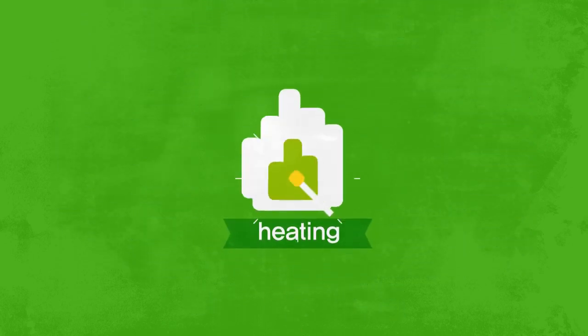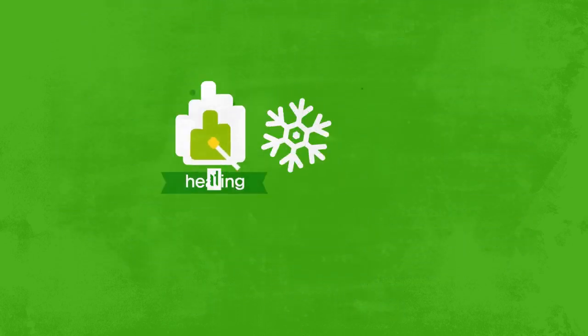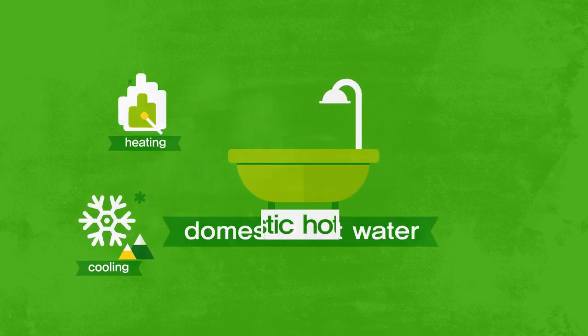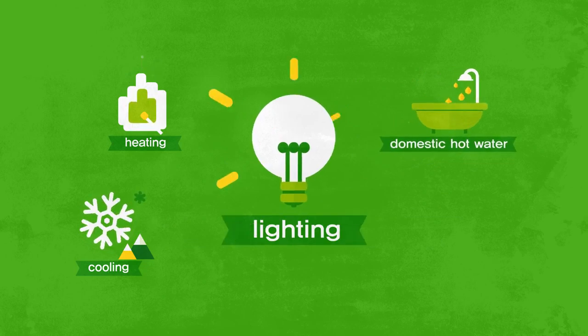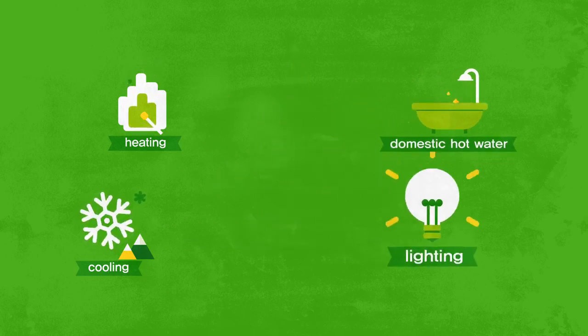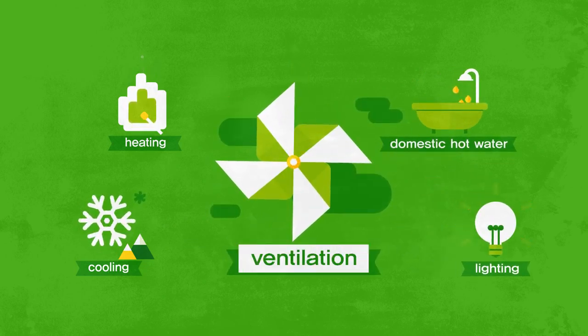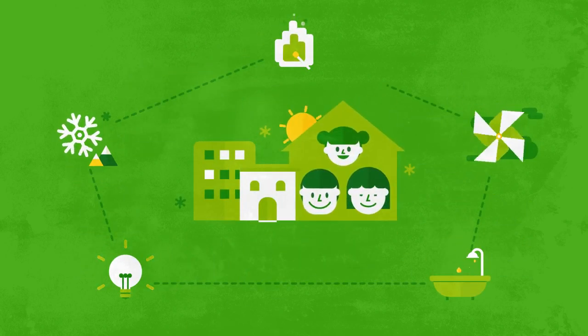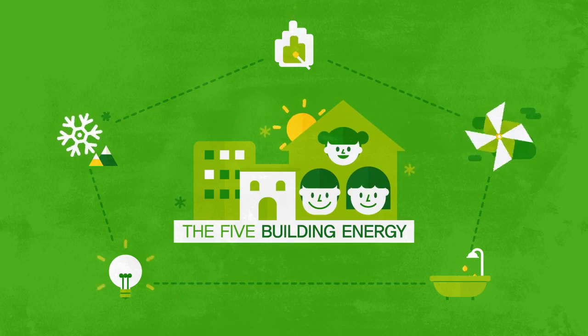At our homes, we use energy for heating during the winter, cooling during the summer, domestic usage of hot water, lighting, and ventilation to bring fresh air. We call these major parts of energy use in homes the five major energy consumptions.